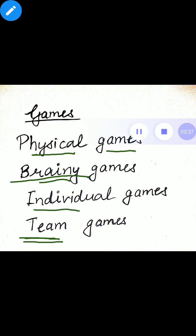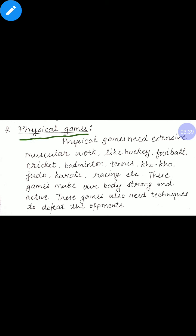Physical games need extensive muscular work, like hockey, football, cricket, badminton, tennis, kho-kho, judo, karate, racing, etc. Physical games require a lot of muscular work. These games make our body strong and active. These games also need techniques to defeat the opponents — you need techniques to beat the opposite team.